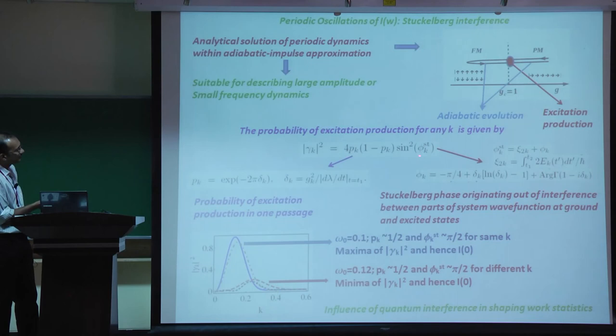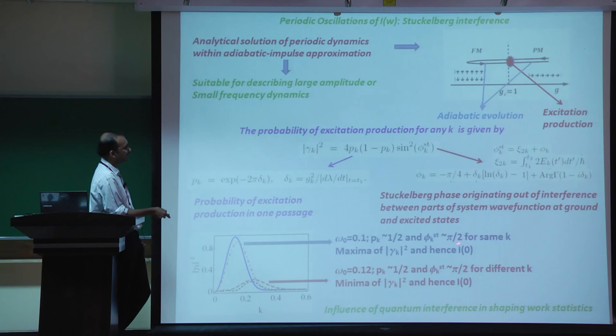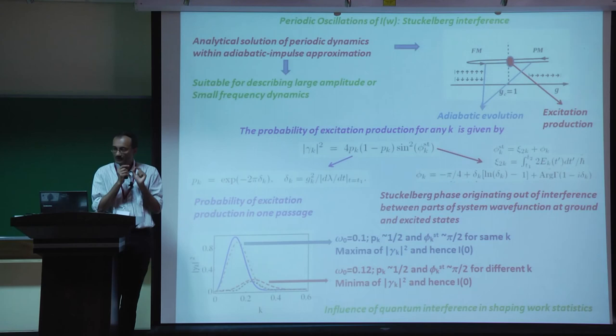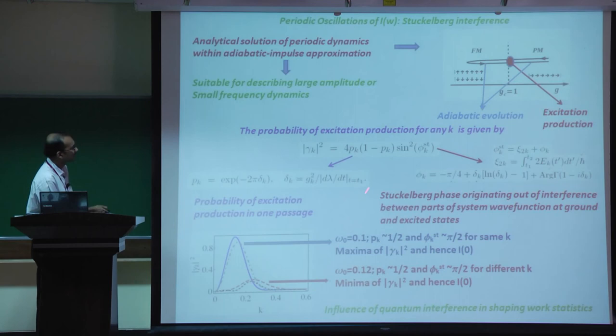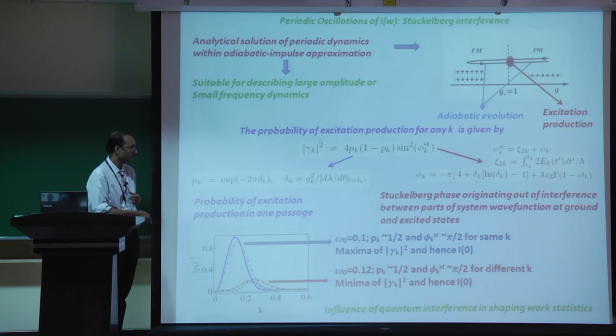The Stückelberg phase physically originates from interference of the wave function between the ground and excited state branches for each k. After the first passage through the critical point, the wave function branches into two states; on the return passage, these branches interfere. When P(k) is close to 1/2 and phi_k ~ pi/2 at the same k, gamma_k^2 is large. When they do not coincide, P(k) remains small. This leads to the oscillatory dependence of the work distribution on drive frequency.